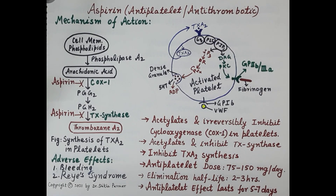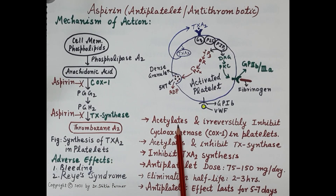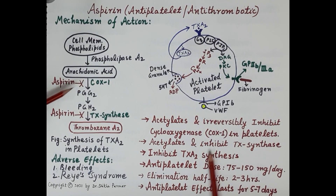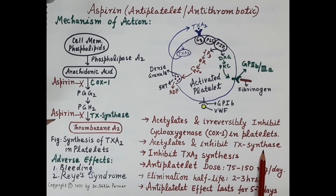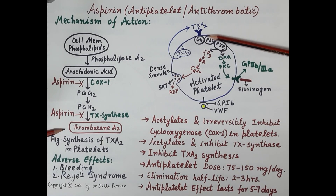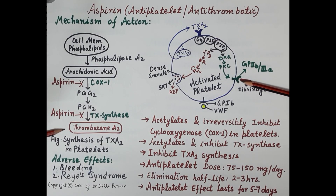Aspirin inhibits the synthesis of thromboxane A2 by acetylating and irreversibly inhibiting COX-1 in platelets. Aspirin also inhibits thromboxane synthase in platelets. Thereby it inhibits the synthesis of thromboxane A2 and thus inhibits thromboxane A2-mediated, GP2b3a receptor-mediated platelet aggregation.